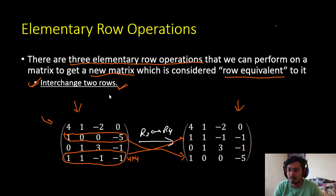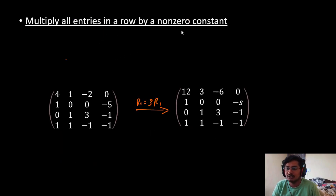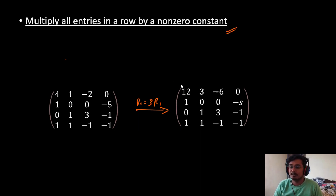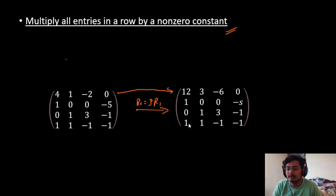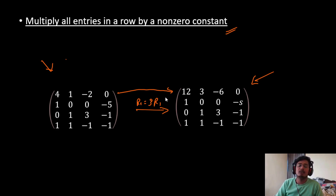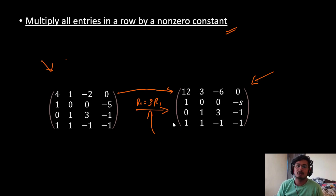The second operation is multiplying all elements of a row by a non-zero constant. We can multiply any row with any constant and this will also not affect the matrix at all. You can see that we have multiplied R1 with 3, which gives this new matrix, and both matrices are the same — multiplying a row by 3 does not affect the matrix results at all. We can use this to make our work simpler.